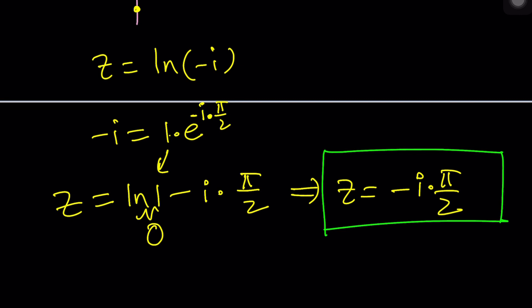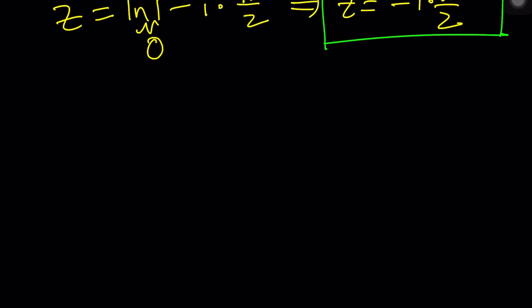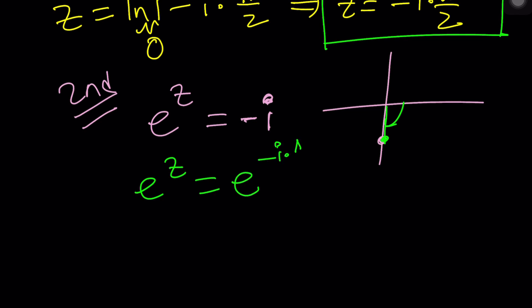Okay, let's go ahead and take a look at another perspective to this problem. That's probably a better idea in my opinion. Let's call this second method. E to the z equals negative i. Why don't we just directly write negative i in the polar form so that we can compare these two exponentials? How do you write negative i again? Negative i is here. That makes an angle of negative pi over two. Its modulus is one. So we can write it as one times e to the power negative i pi over two.